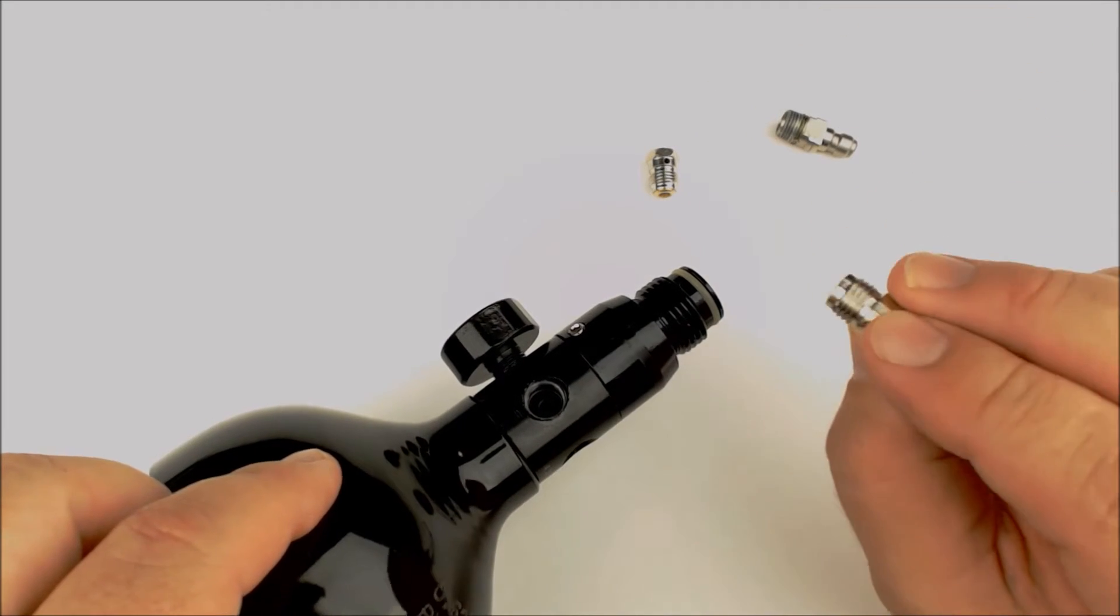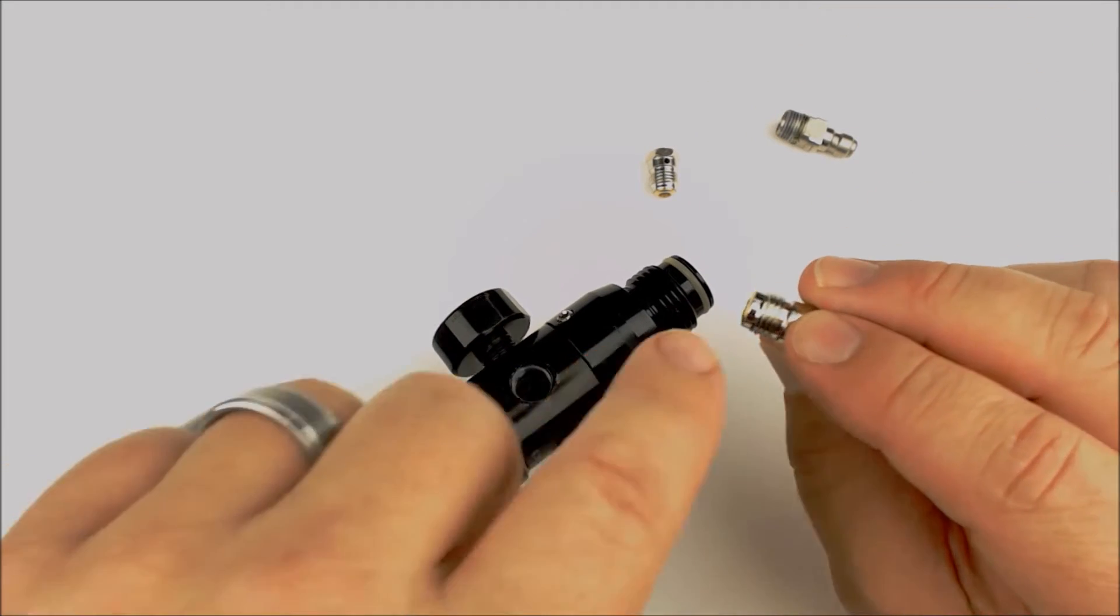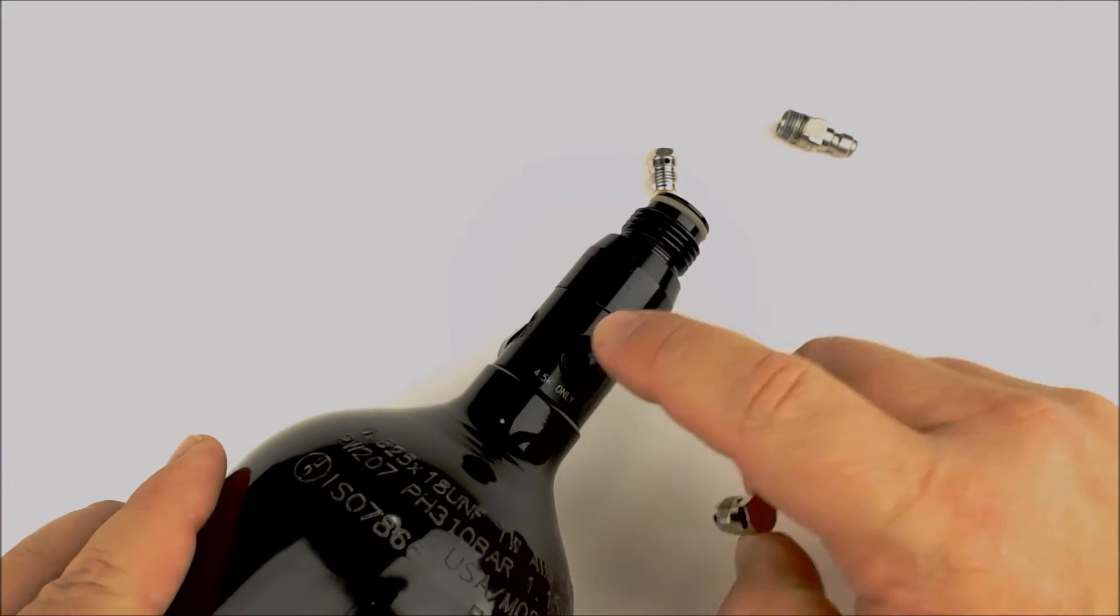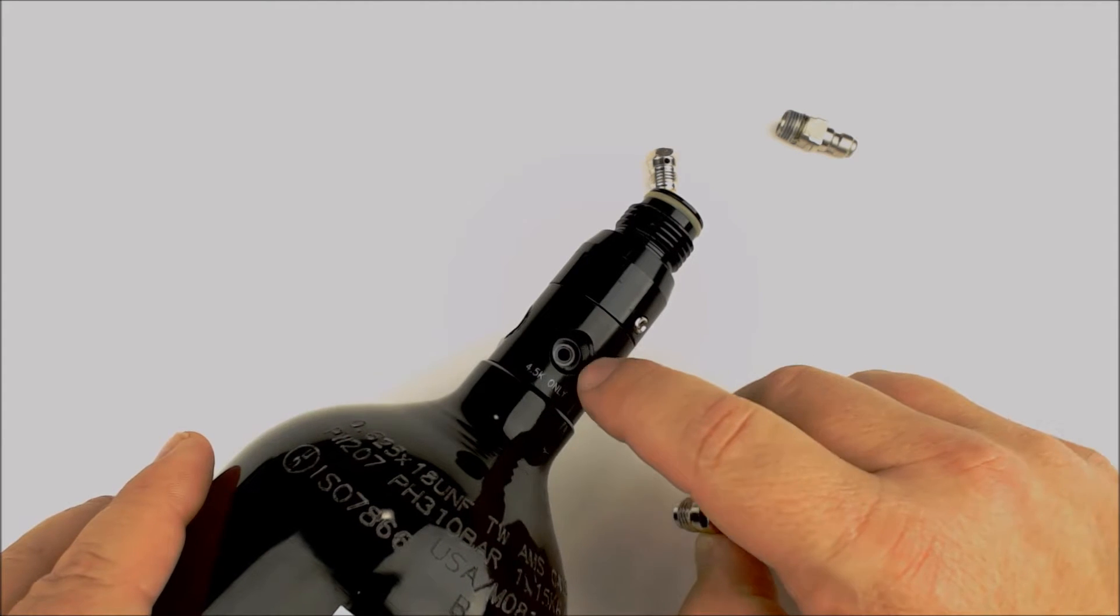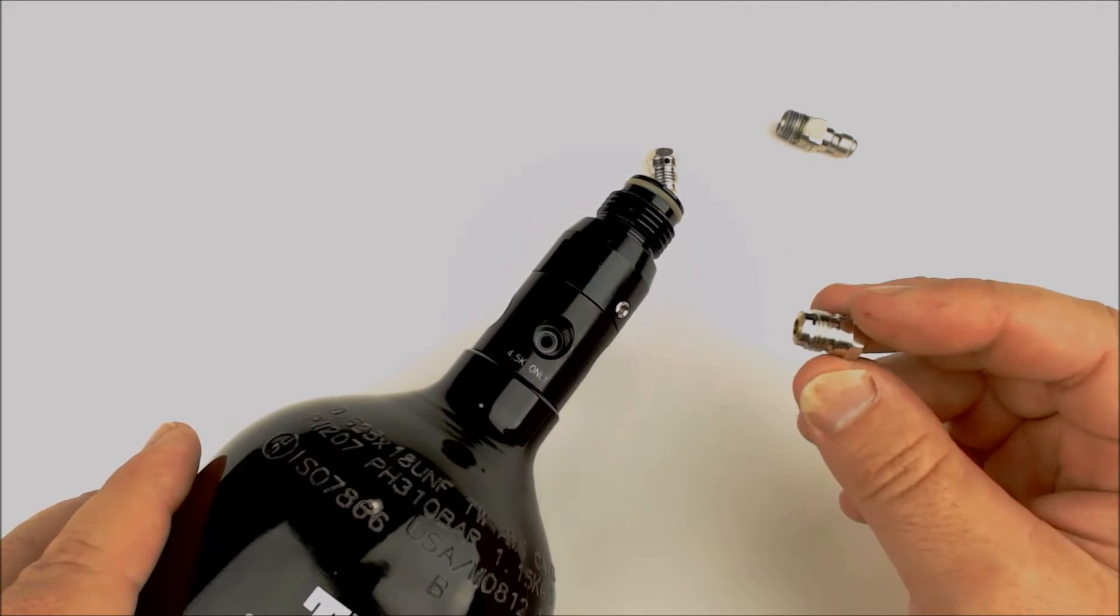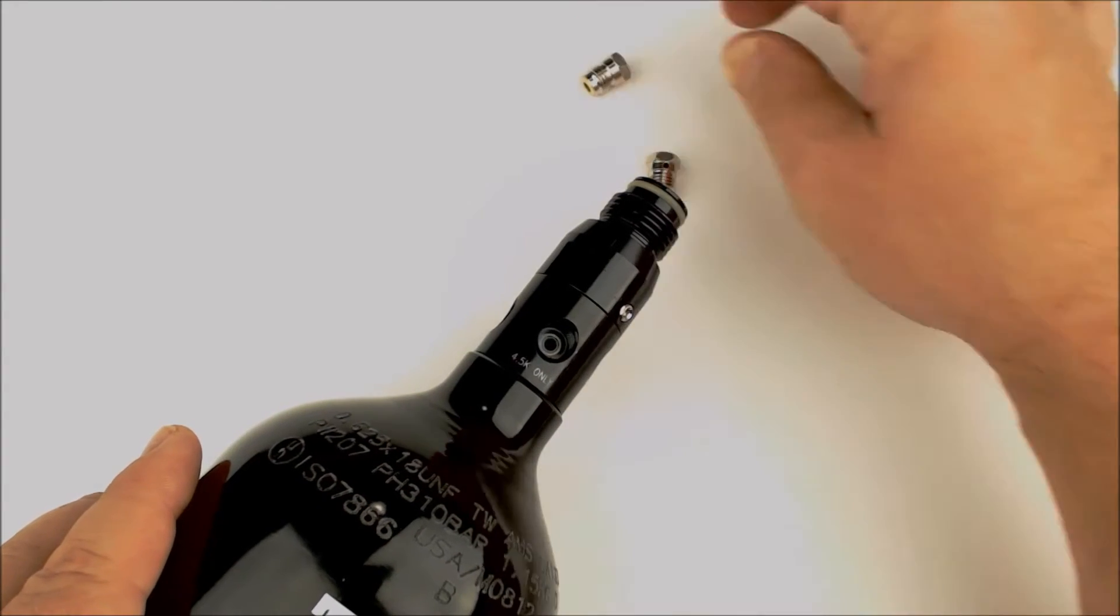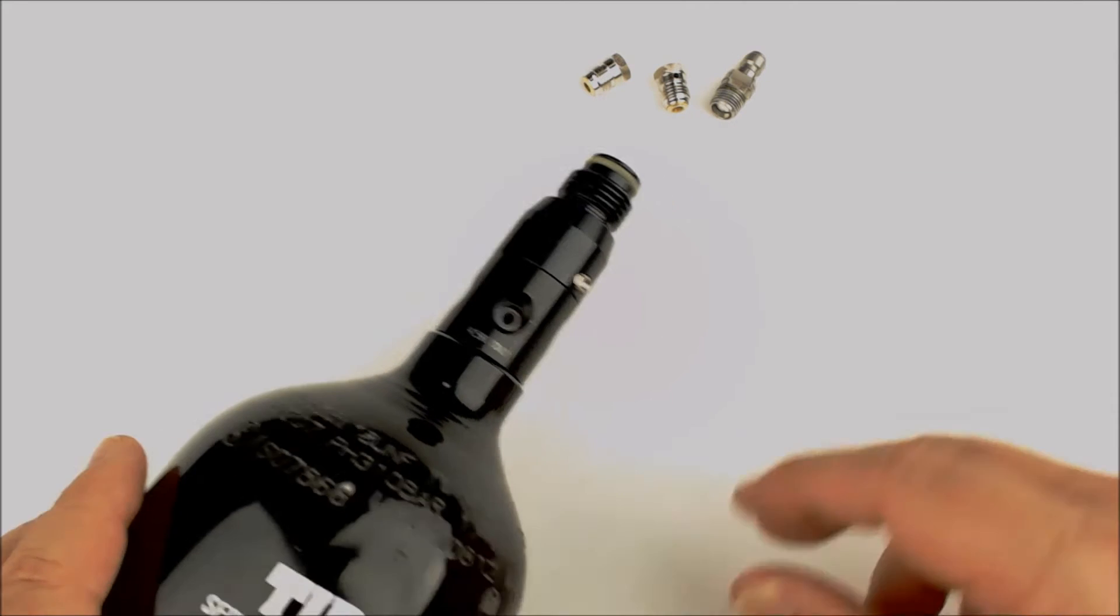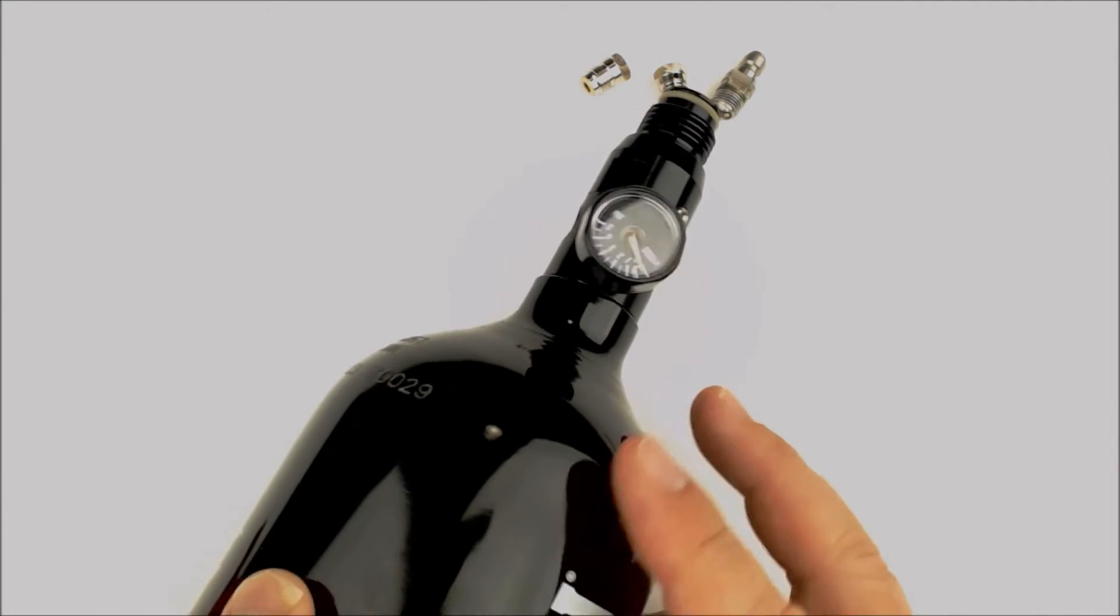That is typically sealed with thread tape or thread putty of some sort. The burst discs, if you notice, don't need to be sealed on the threads. It's the face, this brass face, that seals against the inside bottom of that hole there, not the threads themselves. So we have our burst discs out, our fill nipple, and gauge.